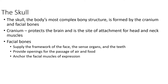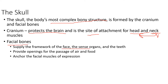The skull is the body's most complex bony structure, formed by the cranium and the facial bones. The cranium protects the brain like a helmet, and it's the site of attachment for the head and neck. If you have a head injury, you can have a neck injury, and vice versa — they're connected by a joint or articulation between the skull and the top vertebra called the atlas. The facial bones supply a framework for the face and sense organs, provide openings for the passage of air and food, and anchor the facial muscles of expression.